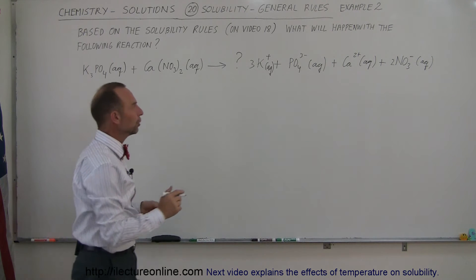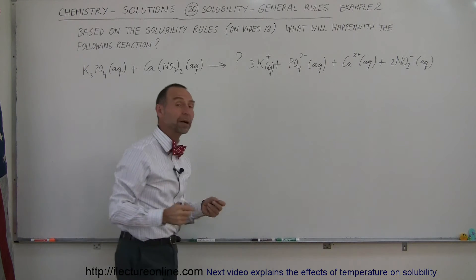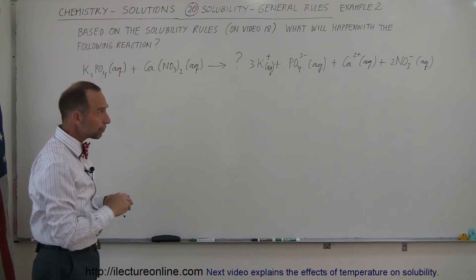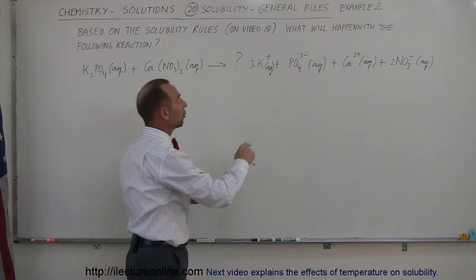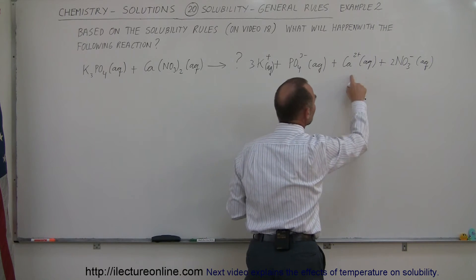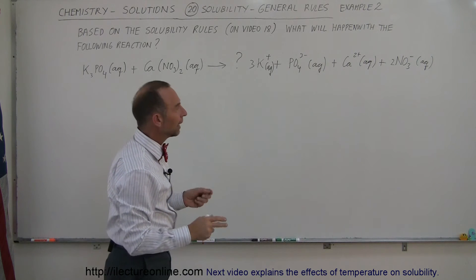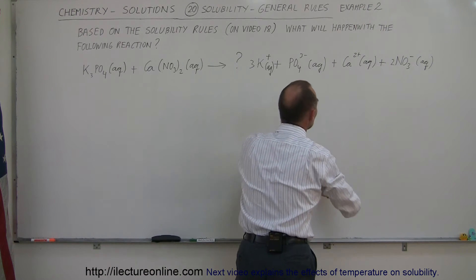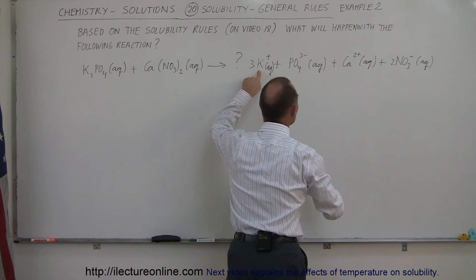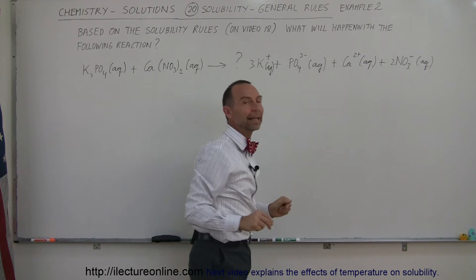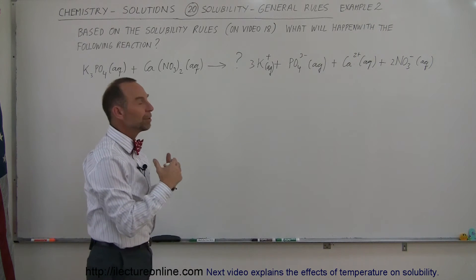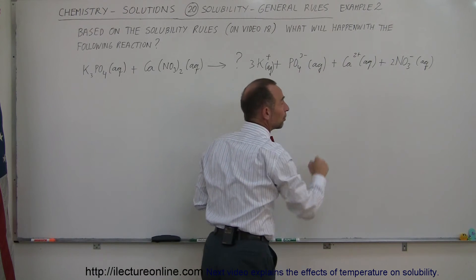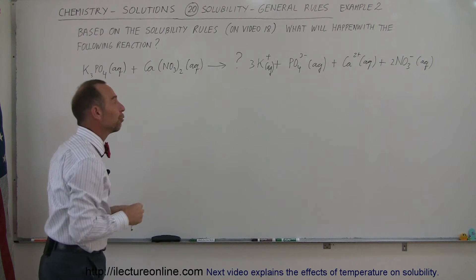Then you take a look — you know that the phosphate ion, in general, unless it's paired up with ammonium or an alkali metal, tends to be insoluble. Notice you have a phosphate ion here and a calcium ion, which is an alkaline earth metal, and those two combined are not soluble. So what's going to happen is those are going to combine together and precipitate out of the solution as a precipitate. The potassium and the nitrate ion will remain in solution.